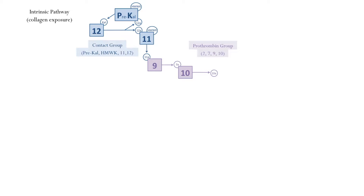These events require a few minutes, whereas the extrinsic pathway is completed within a few seconds. The release of tissue factor, also known as factor III, into the bloodstream initiates the extrinsic pathway. Contact with factor VII activates factor VII, which reacts with factor X. Along with factor III, VIIa activates factor X and completes the extrinsic pathway.